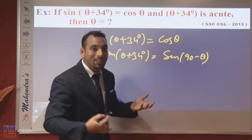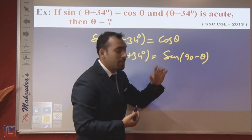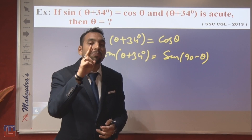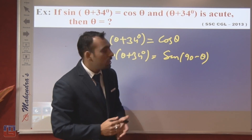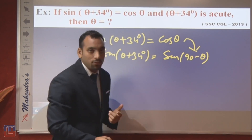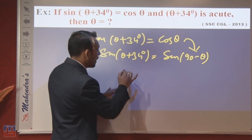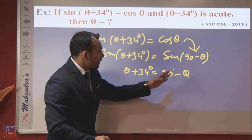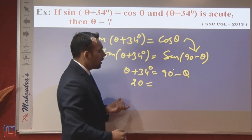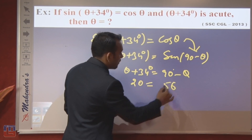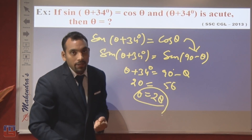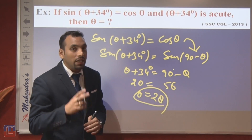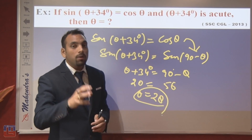Since 90° − θ lies in the first quadrant, all ratios are positive, so cos θ = sin(90° − θ) is positive. Comparing: θ + 34° = 90° − θ, which gives 2θ = 56°, therefore θ = 28°. With the quadrant concept, things are very easy to solve.